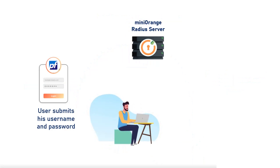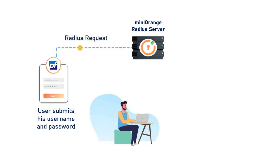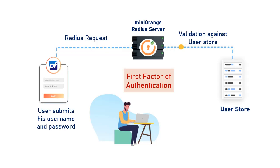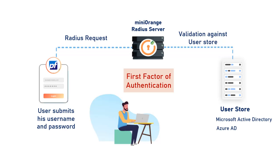User submits his username and password, which is accepted by the Mini Orange Radius server as a Radius request. The user can be validated against any user directory like Microsoft Active Directory, Azure AD, OpenLDAP, or you can keep users in the Mini Orange user directory as well.